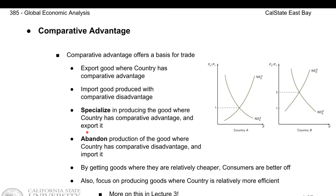Similarly, since Norway is not as efficient at making iPhones as the U.S., it doesn't make sense for the world to start purchasing iPhones from Norway. As a result, Norway may stop producing iPhones and simply import from the U.S. This idea is known as abandoning — after trade, countries will start to produce less of the goods they're less efficient at.